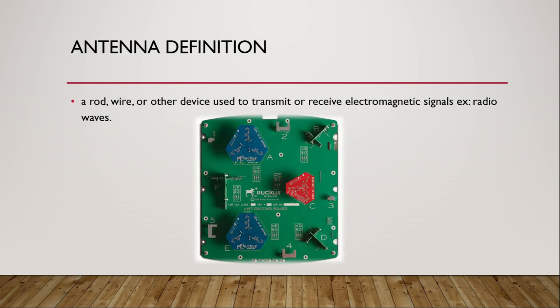Antenna definition, what you're looking at, first of all, is an access point. This is an under-the-hood look of what you might see under many access points in office buildings and an antenna. By definition, it is a rod, wire, or other device used to transmit or receive electromagnetic signals, for example, radio waves. And this is exactly what Wi-Fi devices use and such as we're looking at.